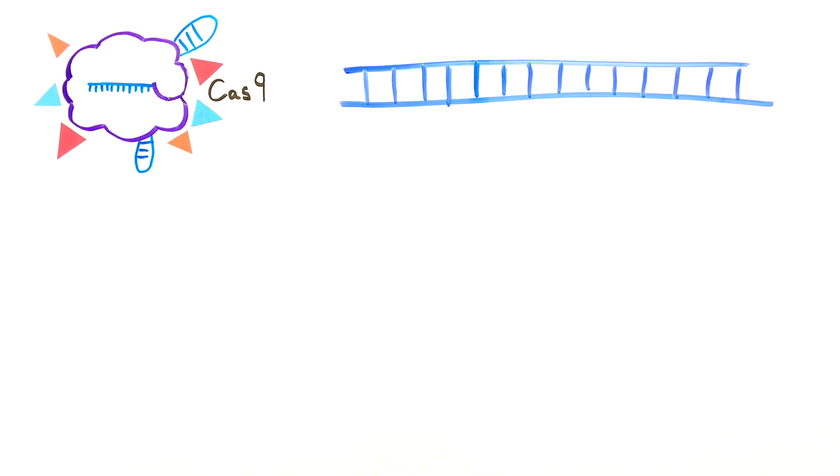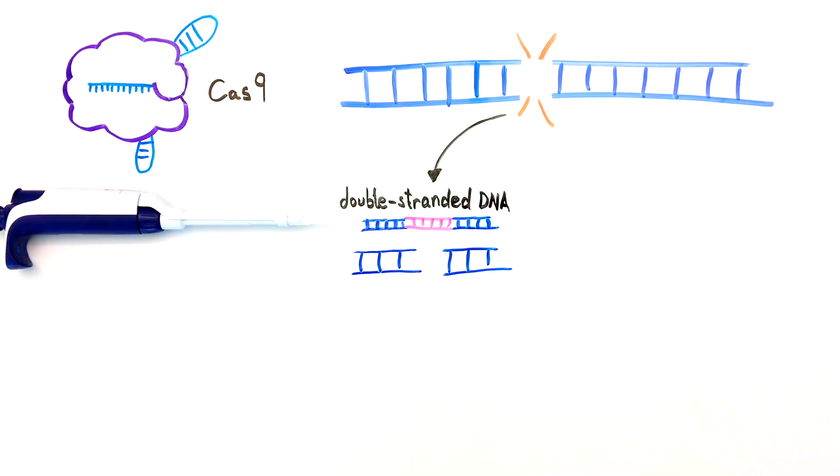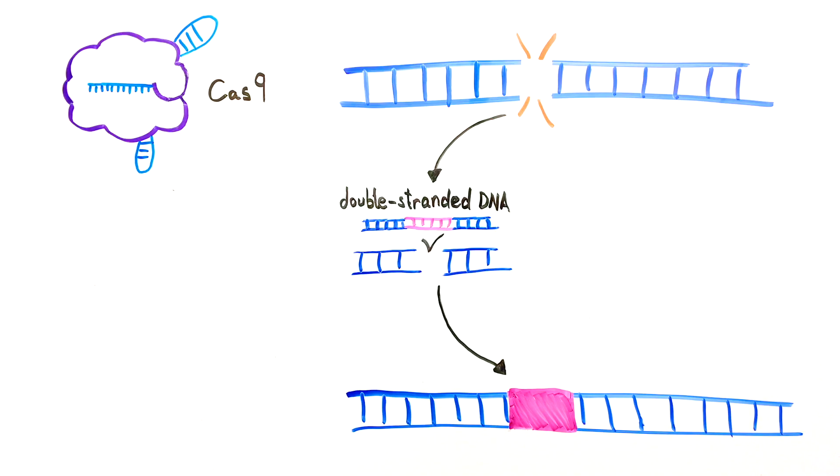After Cas9 makes a cut in the cell's DNA, the cell can repair the break in a variety of ways. One repair method involves patching in double-stranded DNA that's been added by the experimenter. This DNA is designed to have long ends that match the sequences at the cut site, telling the cell where it needs to go.